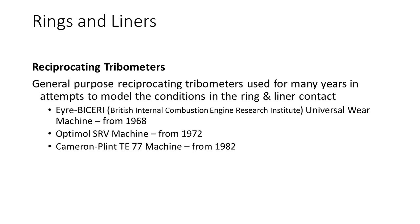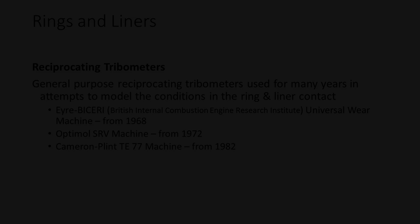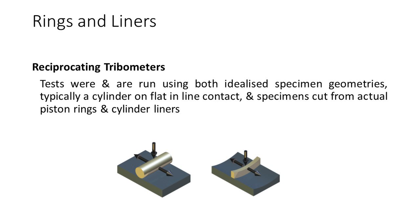General purpose reciprocating tribometers have been used for many years in attempts to model the conditions in the ring and liner contact. Starting with the BICERI Universal wear machine in 1968, the SRV machine in 1972, and the longer stroke Cameron Plint machine in 1982. With all these machines, tests were and are run using both idealised specimen geometries — typically a cylinder on flat in line contact — and specimens cut from actual piston rings and cylinder liners.